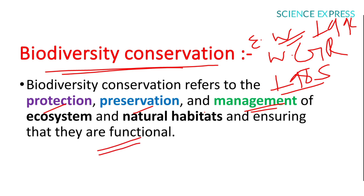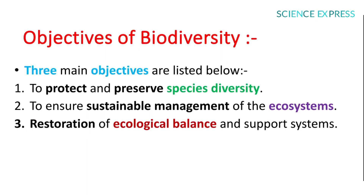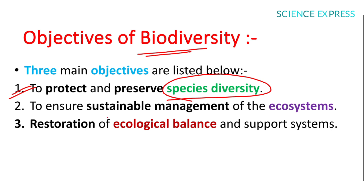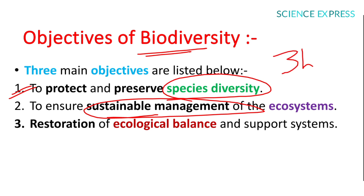The three main perspectives of biodiversity conservation are protection, preservation, and management. The three main objectives are: to protect and preserve species diversity, that means the number of different species represented in a given community; to ensure sustainable management of the ecosystem, taking concepts from sustainability. Sustainability has three branches: environment, needs of present and future generations, and economy.